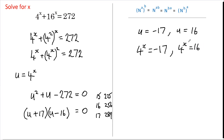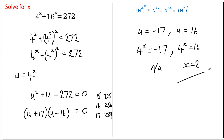Now, 4 to what power gives you 16? Well, 4 squared is 16, so here x must equal 2. And 4 to no power will give you a negative number, so that solution is not applicable. The answer is x equals 2. Did you get it?